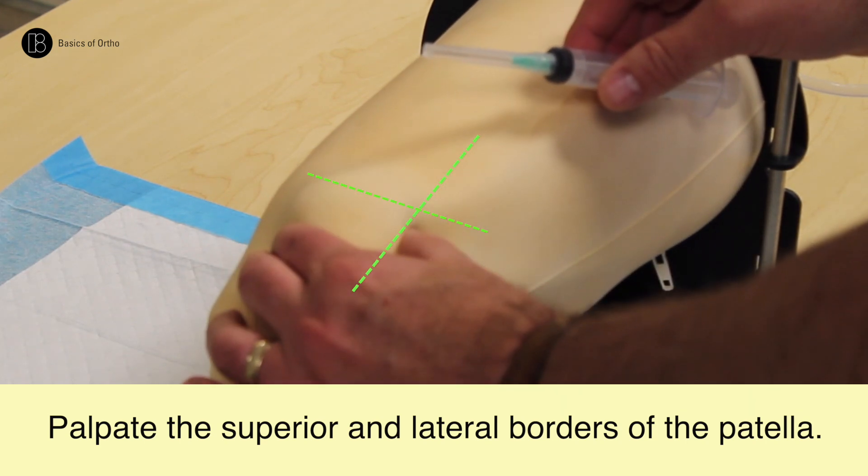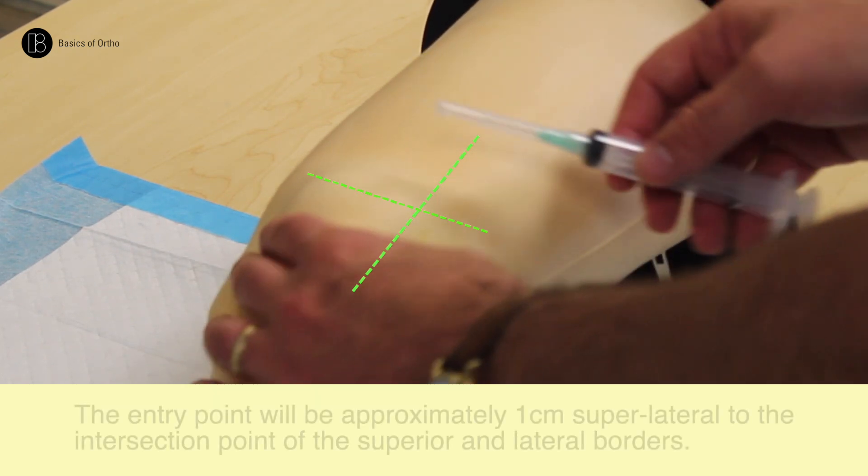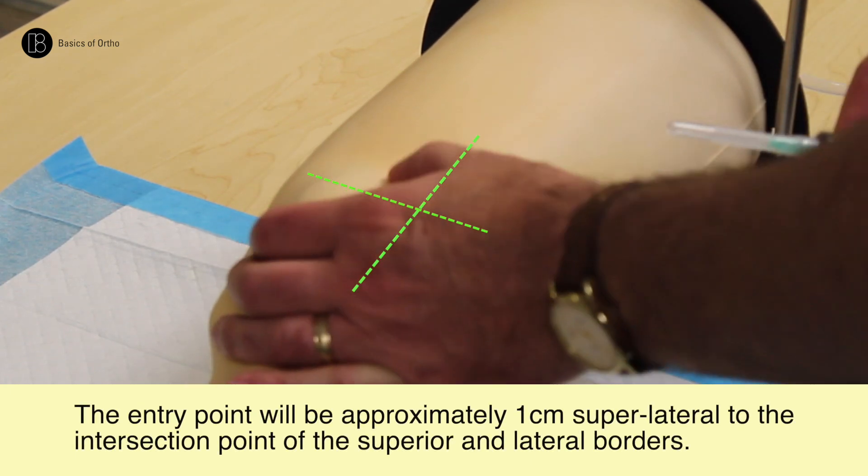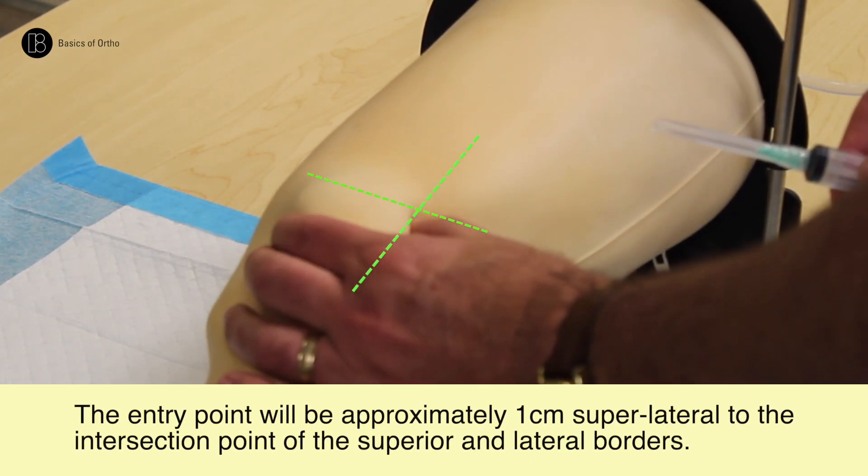Where these two lines intersect, the entry point will be one centimeter just lateral or just diagonal to that intersection point.